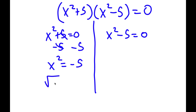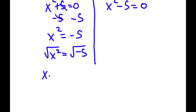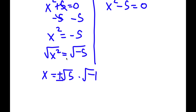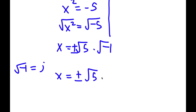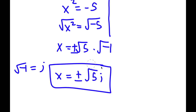Now I'll take the square root on both sides. So the square root of x squared is x. The square root of negative 5 I can write as the square root of 5 times the square root of negative 1, and it's going to be positive or negative. And the square root of negative 1 is actually equal to i. So now I have x is equal to positive or negative square root of 5 times i. So these are two solutions.